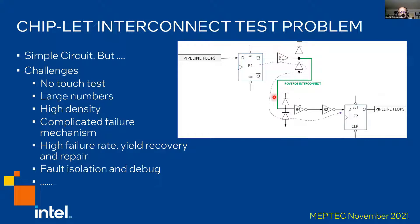So what is the big deal? Firstly, we talked about the density — we really cannot probe any of these, so we definitely need no-touch tests. There are a very large number of them distributed all across the die. To give you an idea, in Ponte Vecchio we had on the order of about 100,000 interconnects, and the numbers are just growing. These tend to be in locations of the die where it is very difficult to add any kind of area for DFT purposes.